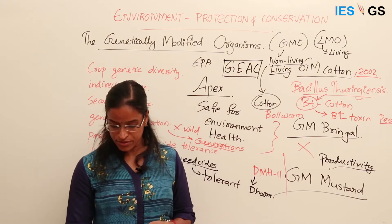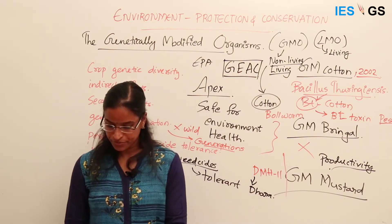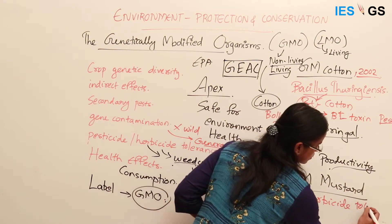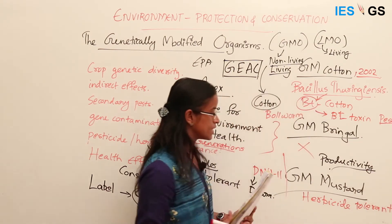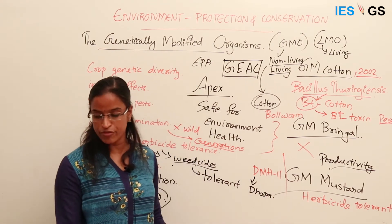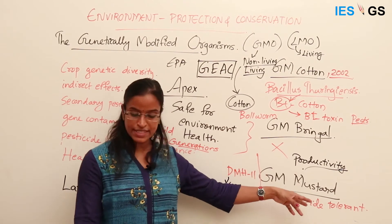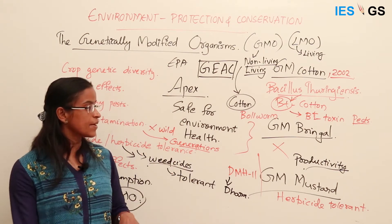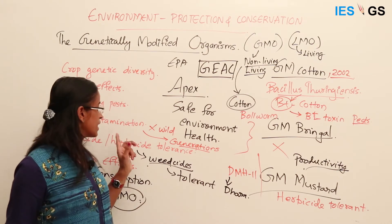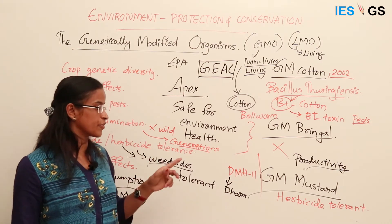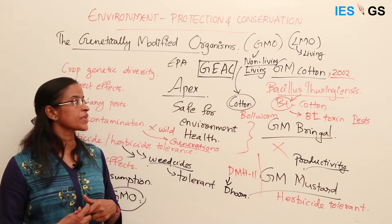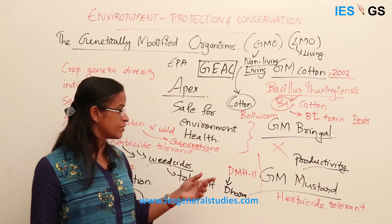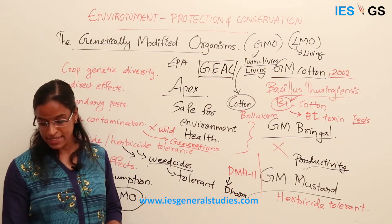To produce GM Mustard hybrids, herbicide-tolerant genes were also used in the process — not directly intended for herbicide tolerance, but for the selection of desired hybrids. However, this means the GM Mustard plant can become herbicide tolerant, which has attracted opposition from environmental activists due to the problems that herbicide tolerance can cause.